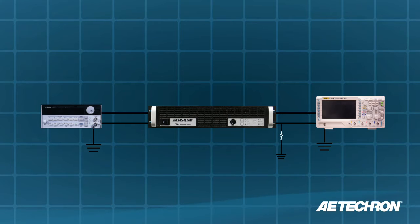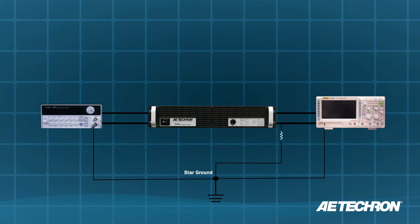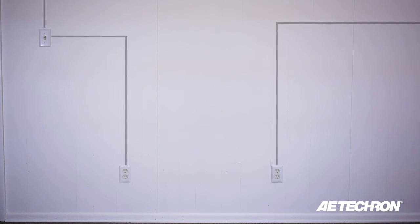To avoid this, it is recommended that a local master ground bus, also known as a star ground, be used in systems to limit differences in ground points. Outlets that are physically close together do not necessarily have equal grounds, as they may be on different circuits.